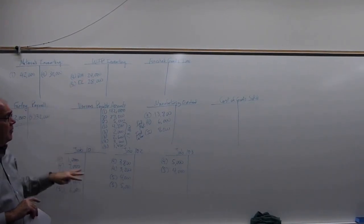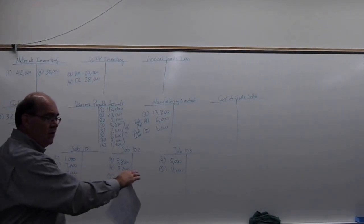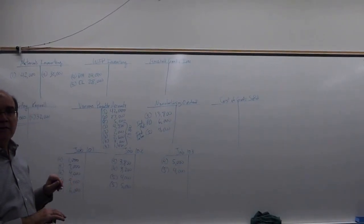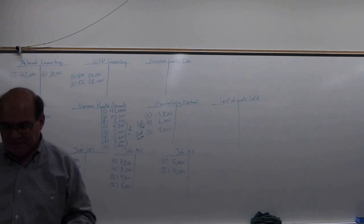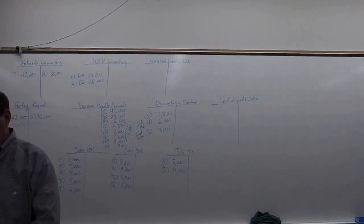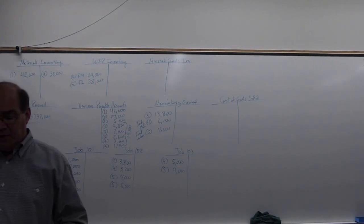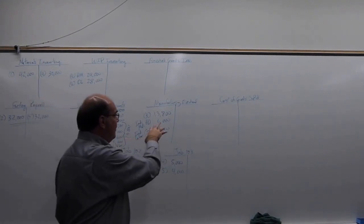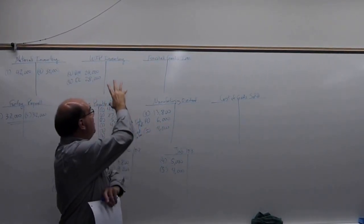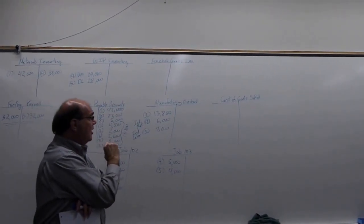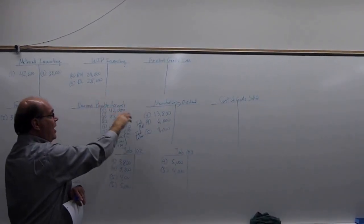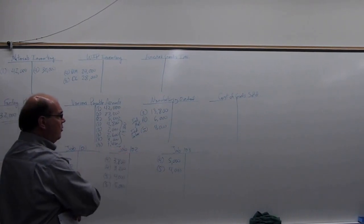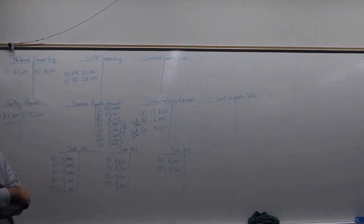Imagine doing this for 15 jobs — and don't worry, on the test I won't give you more than five. Direct materials and direct labor are the straightforward ones. Now we need to deal with manufacturing overhead — all those indirect costs we've been accumulating. We need a way to allocate that overhead to each job.